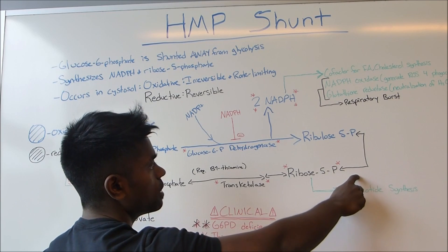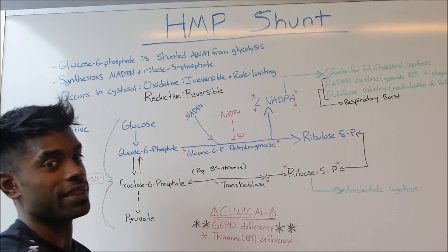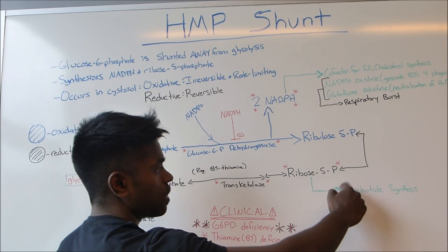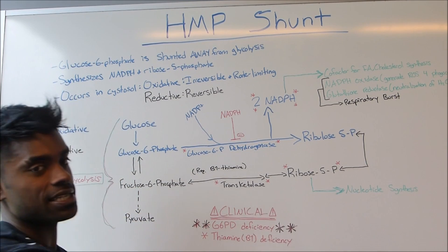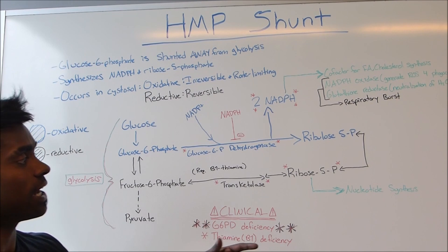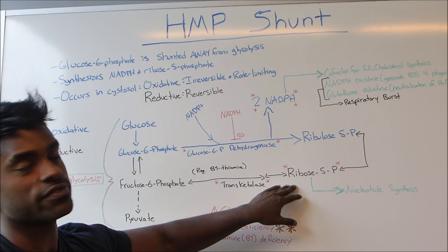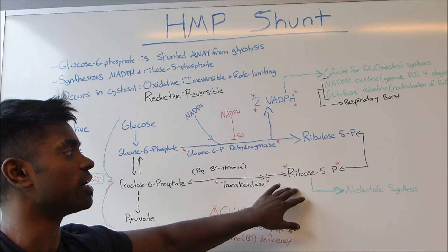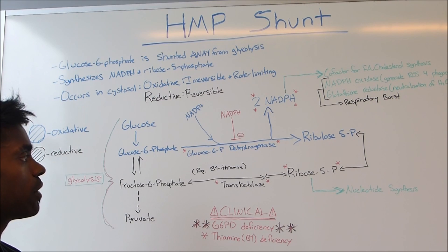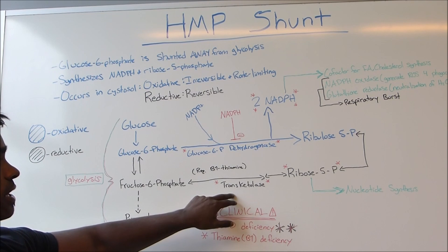Now we're tapping into our reversible pathway. Ribose-5-phosphate is formed — that's the second important product — and it's going to result in nucleotide synthesis such as purines and pyrimidines. It's really cool because the structure of ribose-5-phosphate looks very similar to the structure of DNA, so go ahead and check that out on Google.